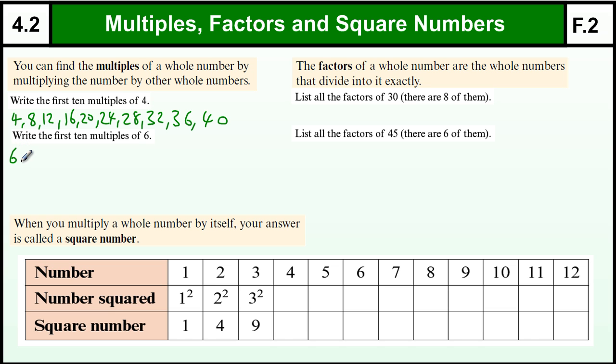The first 10 multiples of 6: similarly, we just go 6, 12, 18, 24, 30, because these are all the numbers in the 6 times table. Essentially what I'm doing is adding on 6 each time until we get to 60.